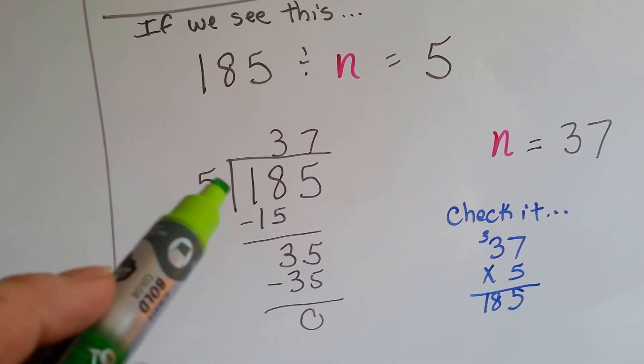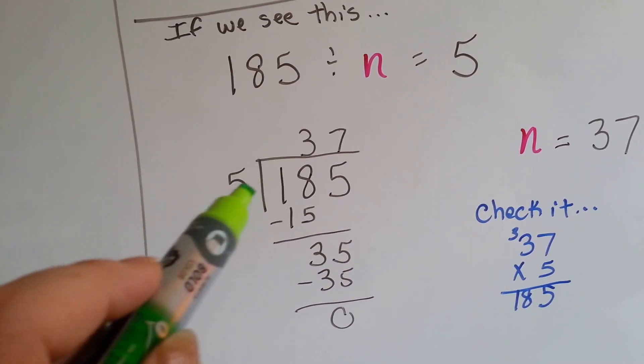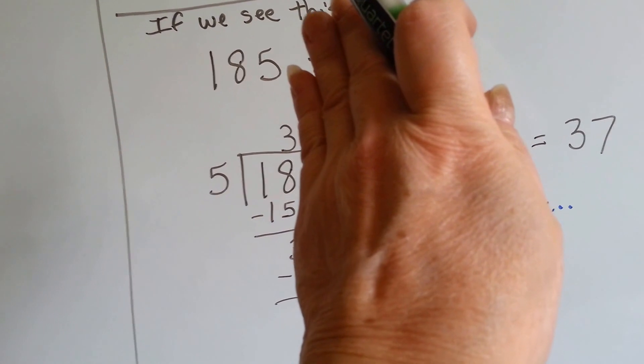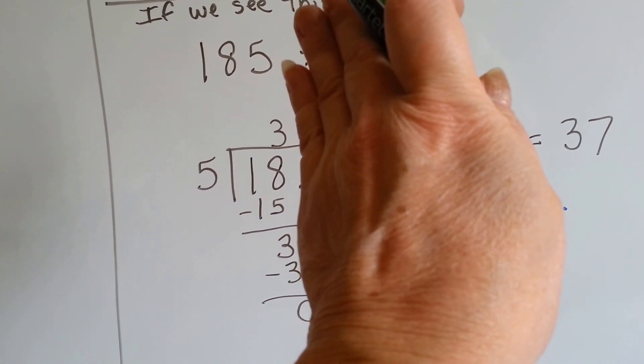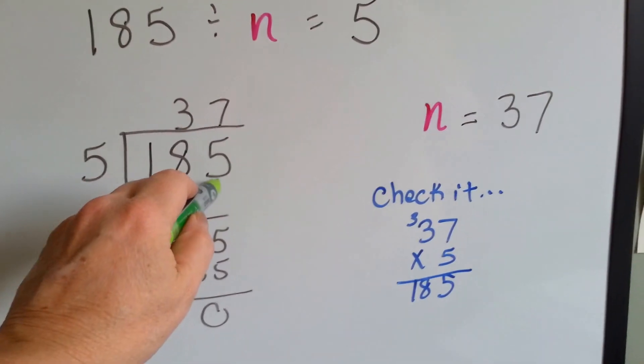5 can't go into 1, so we don't put any answer up here. Can 5 fit into 18? Yes. 3 times. 5 times 3 is 15. We put it under the 18 and do our subtraction and get 3. And now it's the 5's turn to come down.